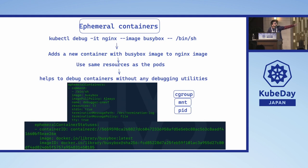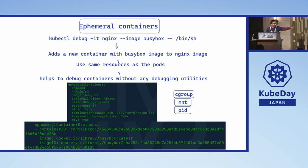Here's a simple example: kubectl debug on an nginx pod using the busybox image with a shell. What it does is add a new container with the busybox image to that nginx pod. If you then run kubectl get pods -o yaml, you'll see two important sections: 'ephemeralContainers' added to the pod spec automatically, and 'ephemeralContainerStatuses' which keeps getting updated.